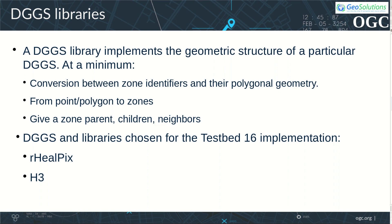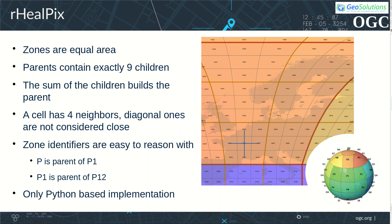The Testbed 16 server has been implemented on top of two libraries — one for the RealPix DGGS and one for the H3 DGGS. The RealPix DGGS is based on equal area zones. Each zone is subdivided into nine children and each has four neighbors. The zone identifiers are easy to reason with — for example, P is the parent of P1, and P1 is the parent of P12. Currently, only a Python 3 library implementation is available.